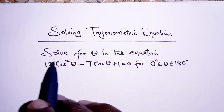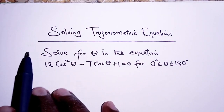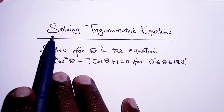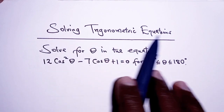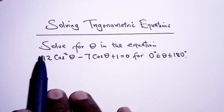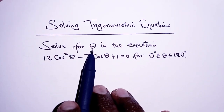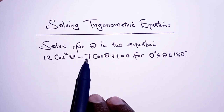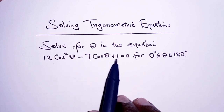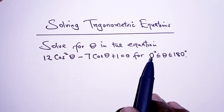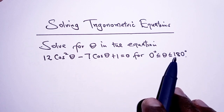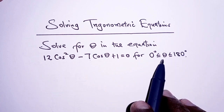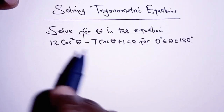Hello everyone, welcome back to our channel. In this video we are going to discuss a question on how to solve trigonometric equations: solve for theta in the equation 12 cosine squared of theta minus 7 cosine of theta plus 1 is equal to 0, for the range 0 to 180 degrees.